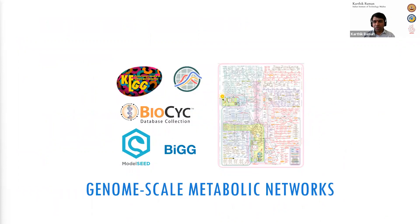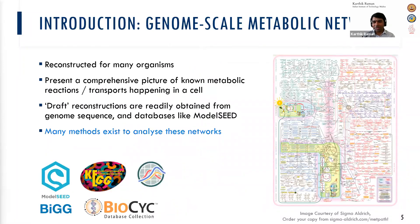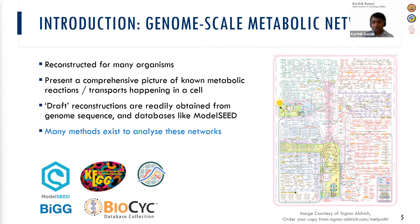Let me start with a brief introduction to genome-scale metabolic networks. You may have seen such pictures adorning the walls of many biochemists and others. Genome-scale metabolic networks are basically a large collection of all metabolic reactions that happen in these organisms, along with information about what enzymes catalyze these reactions. They've been reconstructed for a large number of organisms and essentially present a very comprehensive picture of what is known about an organism's biochemistry. It is also possible to directly reconstruct draft reconstructions from databases such as the Model SEED.